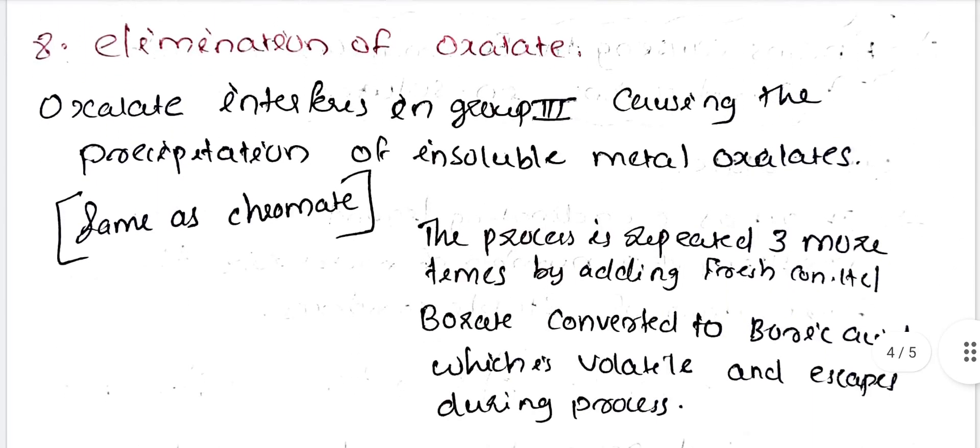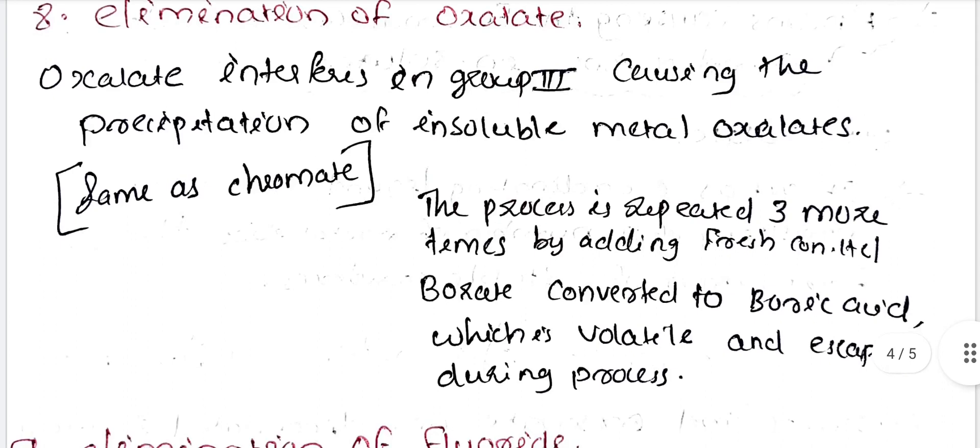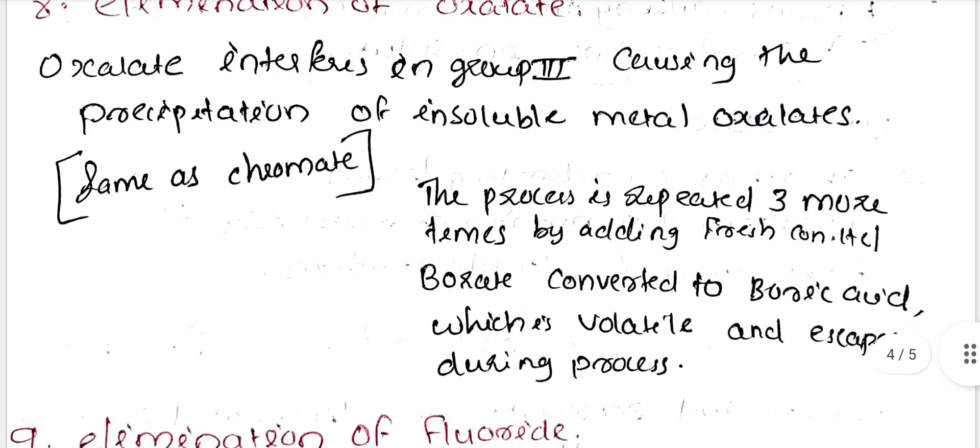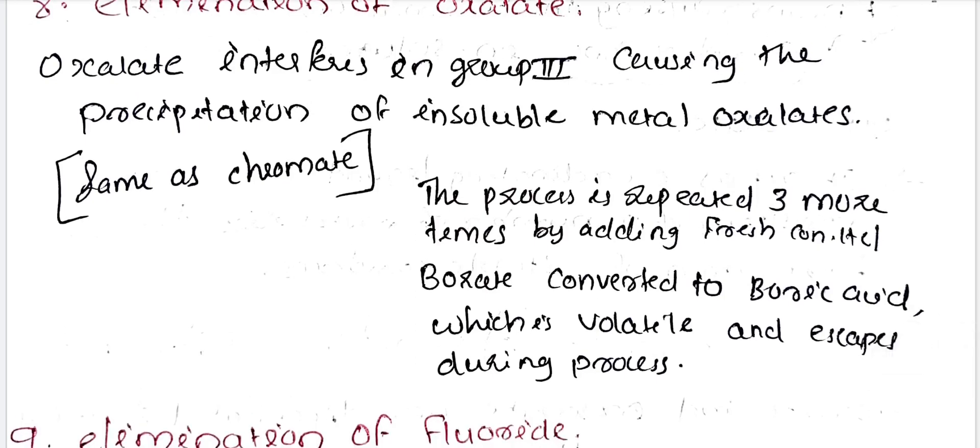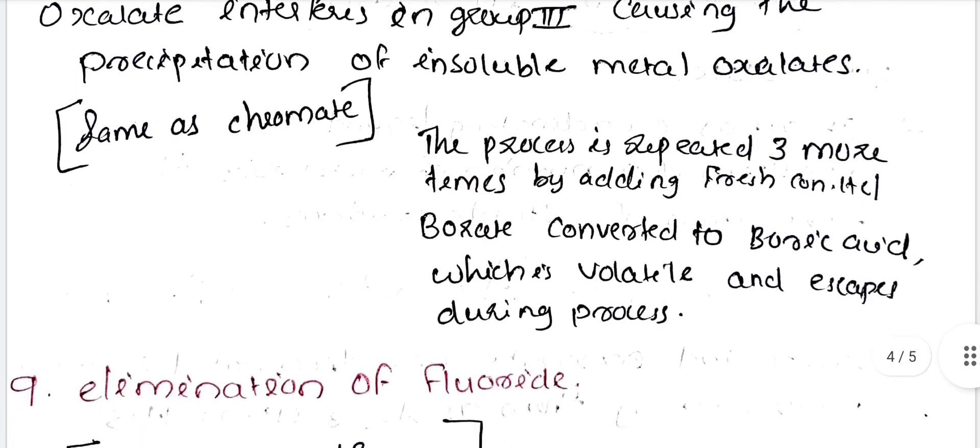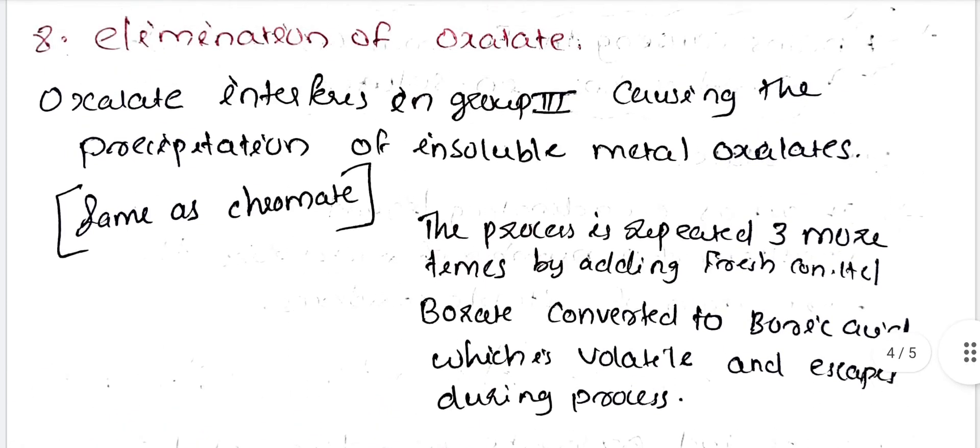Elimination of oxalate. Oxalate interferes in group 3 causing precipitation of insoluble metal oxalates. The process is repeated three more times by adding fresh concentrated HCl. Oxalate is converted to boric acid which escapes during this process.